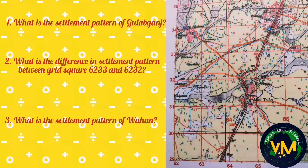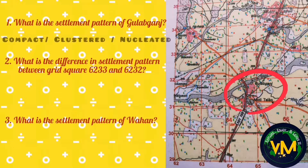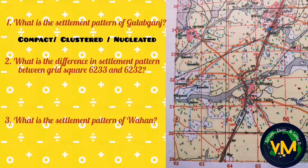I hope you have completed settlement pattern of Gulab Ganj. As you can see, the huts are close to each other — they are compact, clustered, or nucleated. Second question: they are asking you to find the difference, so it means they both are different settlement patterns. Look at square 6233 — here again it is compact.